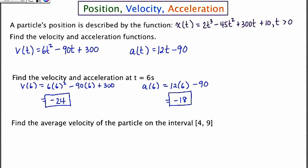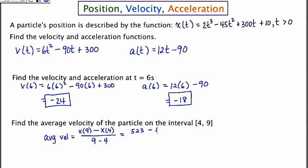The next question asks for the average velocity. The average velocity is found by the change in position over the change in time. We're going to find the position at 9 seconds and the position at 4 seconds, find the difference, and divide by 9 minus 4. I have the position function stored under Y sub 1. Plugging in X equals 9 gives 523, and plugging in X equals 4 gives 618. This is all over 9 minus 4, which is 5.